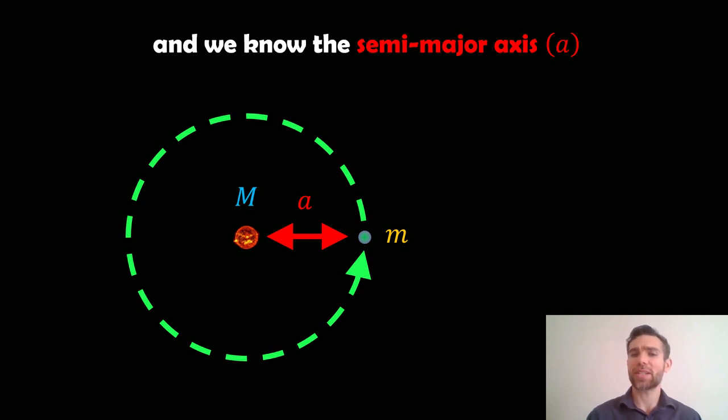If it's elliptical, then the distance between the two objects does change, but the semi-major axis is just half of the major axis of the ellipse that the orbit makes out.